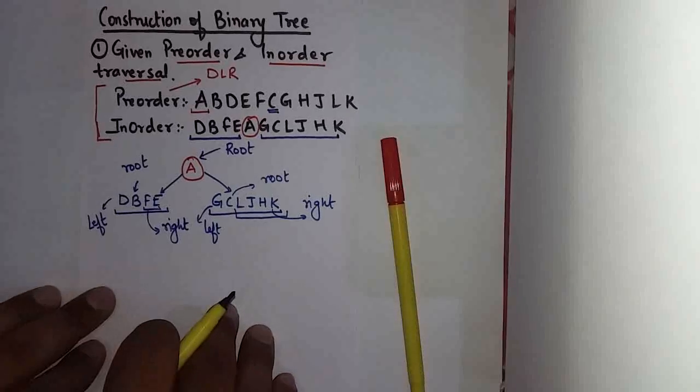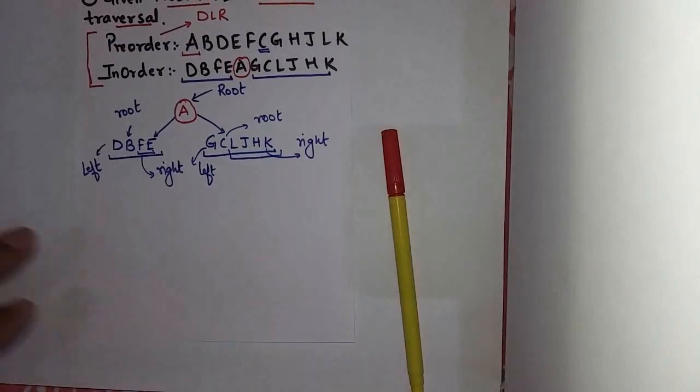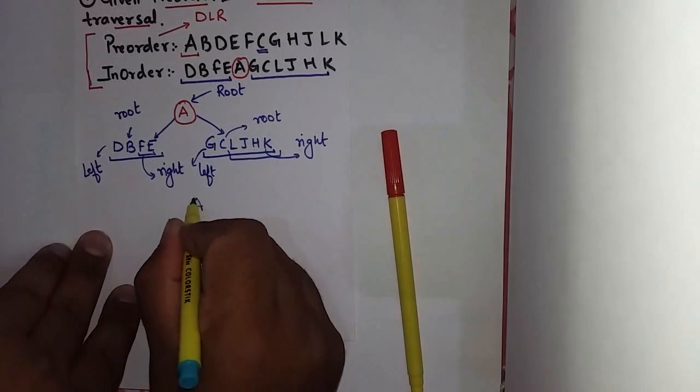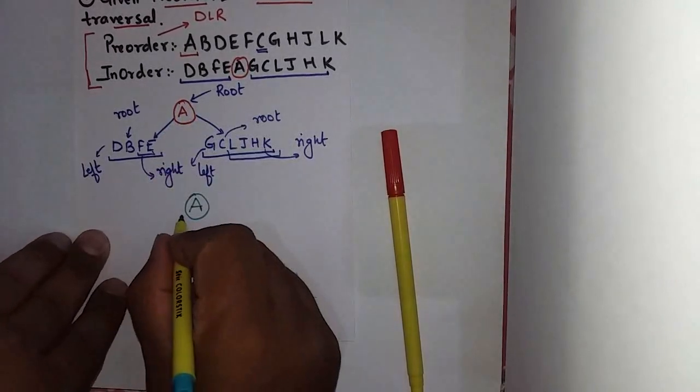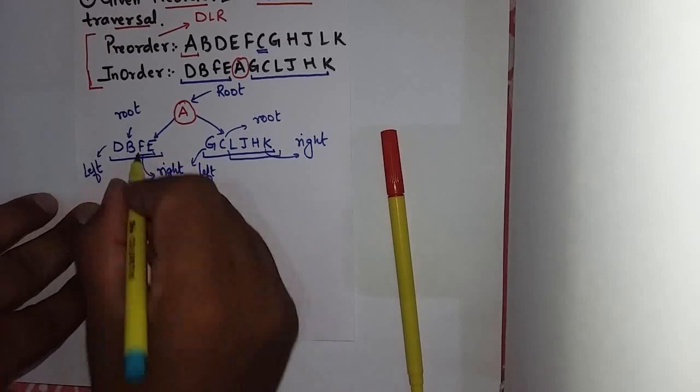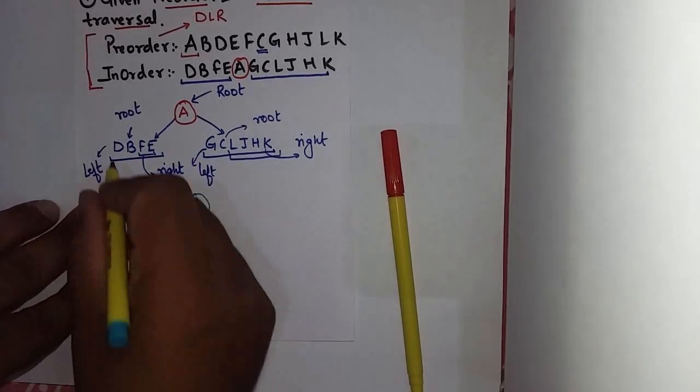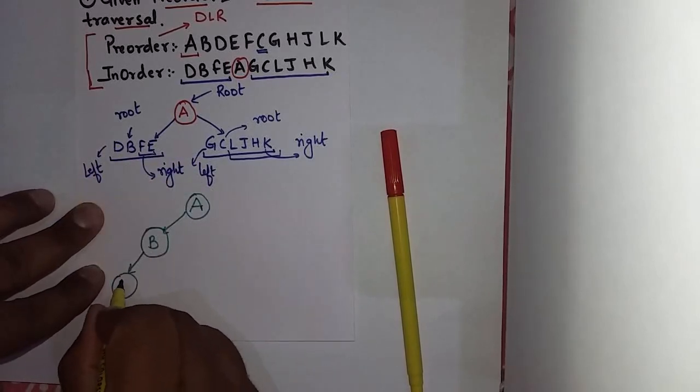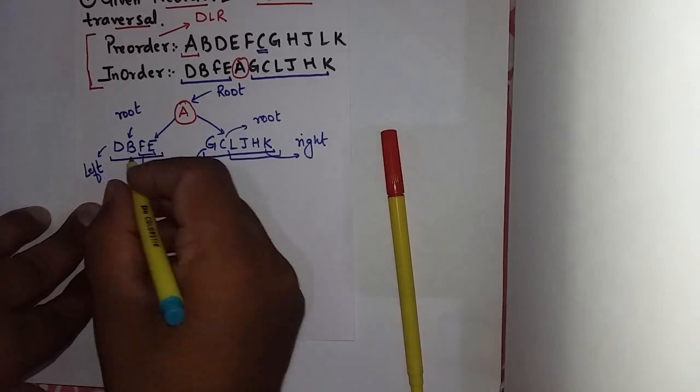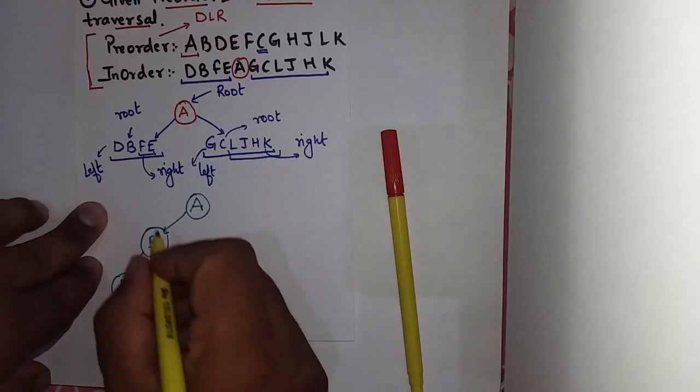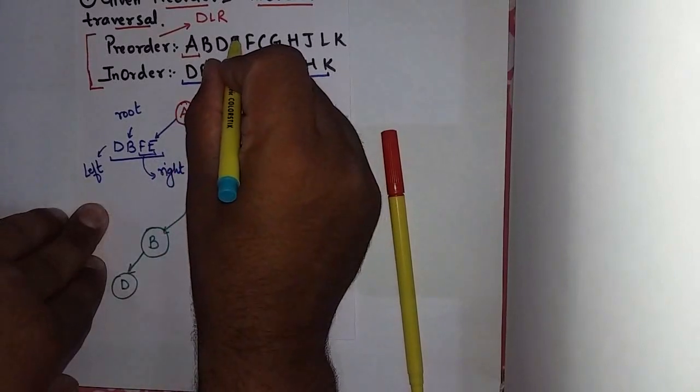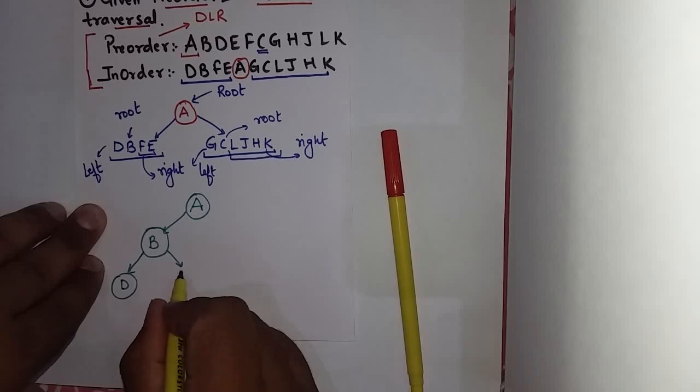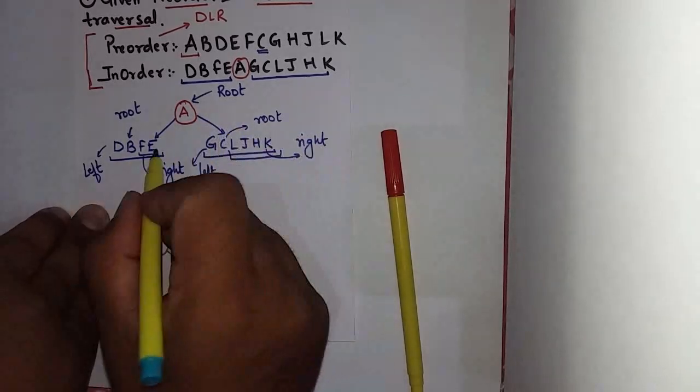It will look like A as my root node. From this root is B. B's left will have D. And now B's right has F and E. And from F and E, which will become root? E, because E comes first. So E will become root.